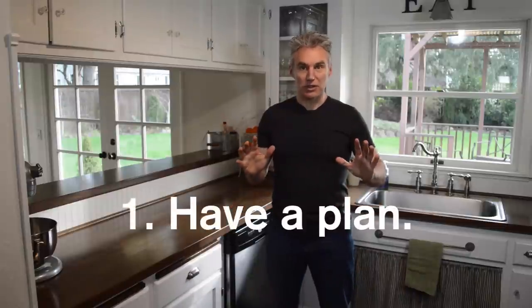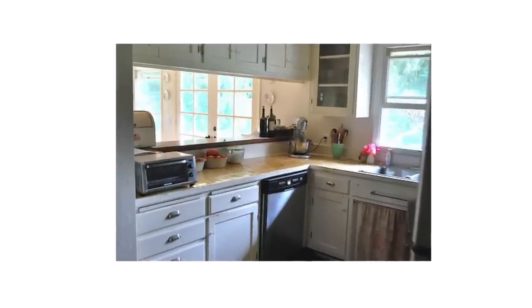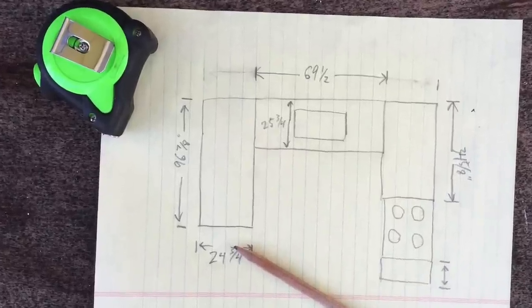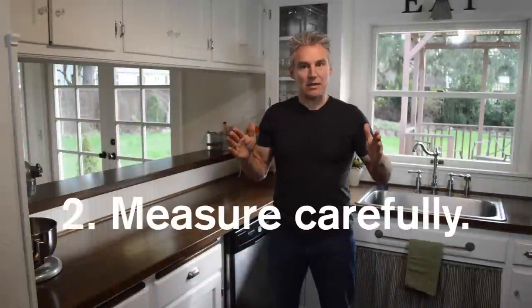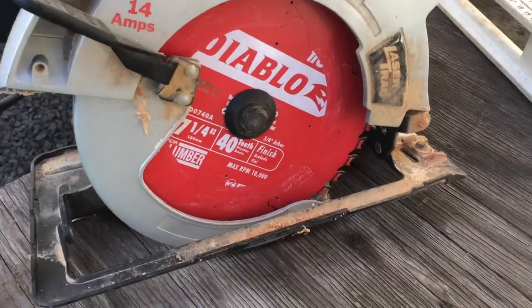Installing butcher block countertops are actually a lot easier than you might think, but you got to do three things. Number one, first you got to think through before you do anything. You need to carefully measure the space where the countertops are going to go, how far out you want the lip of the counter to come. Then you can buy your countertops and then you can tear out the old countertops. Then the second thing you need to do is very carefully measure the countertop to go in the space. And then when it comes to cutting the countertops, we have a video on a trick for doing that accurately and very easily just using a skill saw. And then finally, you want to get help because butcher block is really heavy and when you do the final install, you're going to want somebody to help you set it into place.